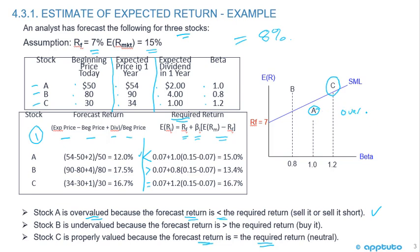Remember: below the security market line means overvalued. For Stock B, the forecast return is greater than the required return, so it lies above the line, meaning it is undervalued — so we would buy it.